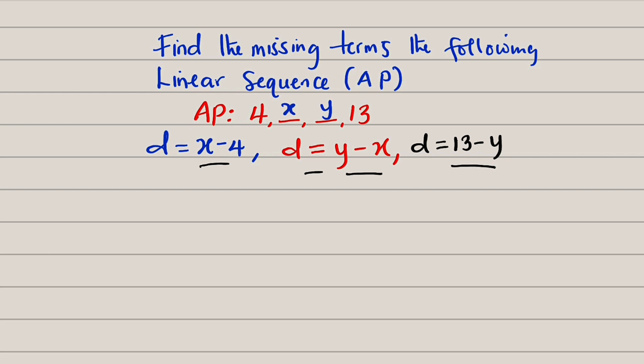So we can now form two equations here. Let me form the first one. The first equation is that x minus 4 will be exactly equal to y minus x. And the second equation I can form here, the same y minus x can be equal to 13 minus y. Y minus x is equal to 13 minus y. So this is my first equation and this is the second equation.